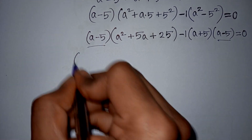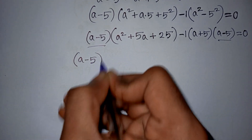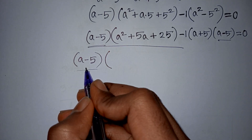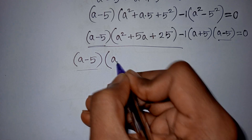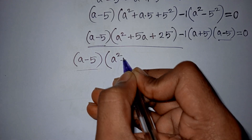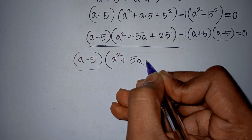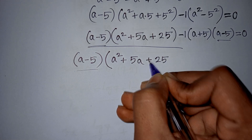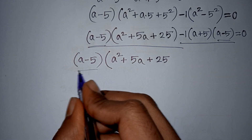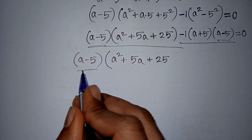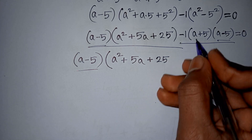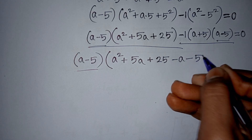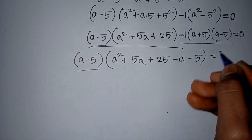Now, take (a minus 5) as a common factor, so (a minus 5) is out of the bracket. This (a minus 5) and this (a minus 5) will be cancelled, giving a² plus 5a plus 25. Then this (a minus 5) and this (a minus 5) cancel, so we have minus 1 multiplied by (a plus 5), which is minus a minus 5. Bracket close is equal to 0.